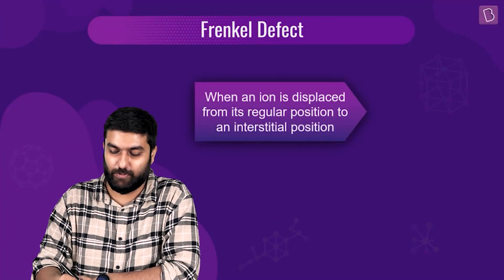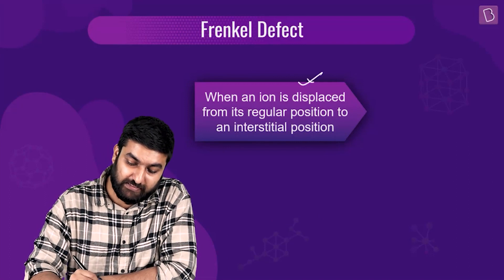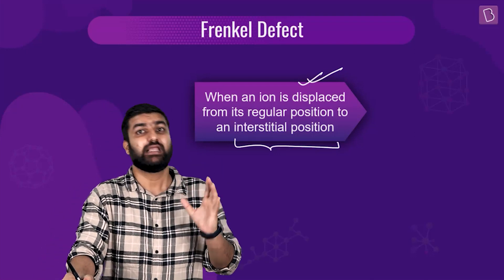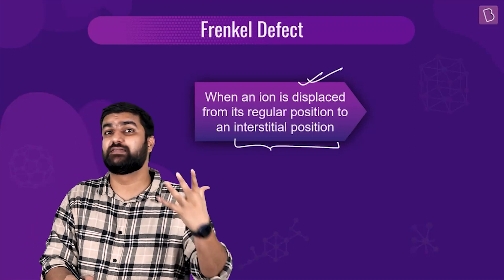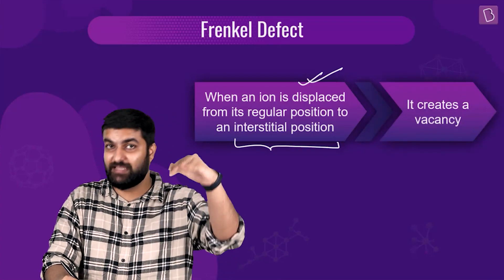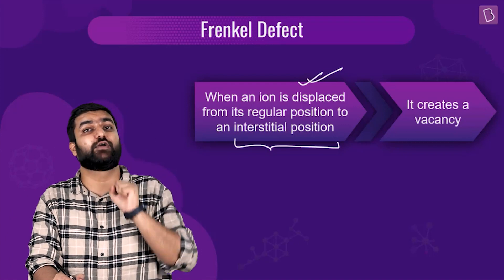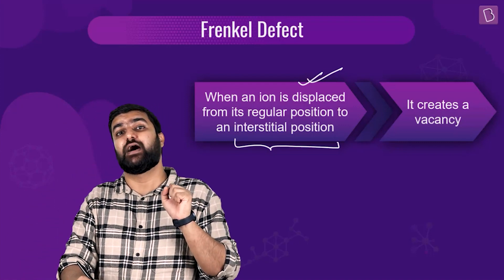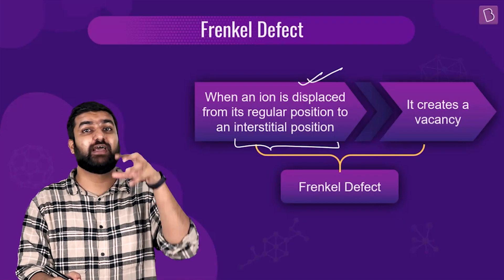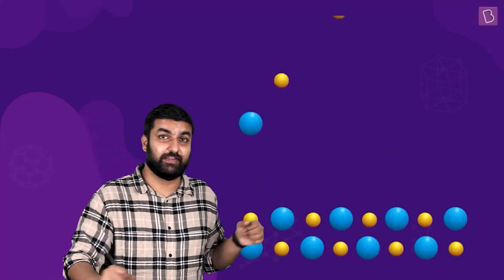We are going to talk about the Frenkel defect. When an anion is displaced from its regular position to an interstitial position — somewhere between the lattice points — it's not like a vacancy where particles are removed, and not like an interstitial where particles are added. It's a combination of the two, where particles move from their normal position to somewhere else. This is what we call the Frenkel defect.